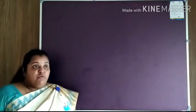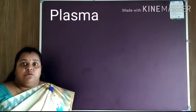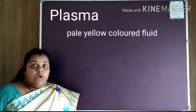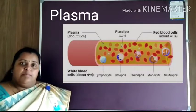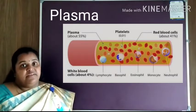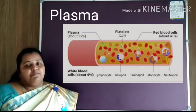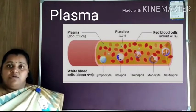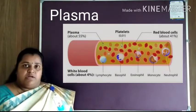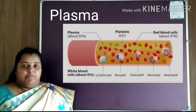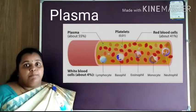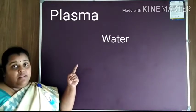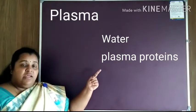Even though blood cells perform various functions, plasma also plays a major role in transportation of nutrients. Plasma is a pale yellow coloured fluid present in blood, composing about 55% of blood. The simple nutrients found after digestion — like glucose, amino acid, fatty acid, and glycerol — reach the cell through plasma. The blood cells are present within plasma. Now let us see what are the components of plasma.